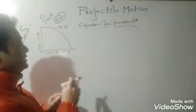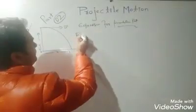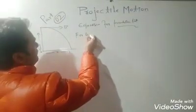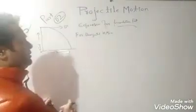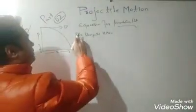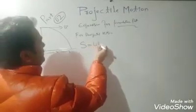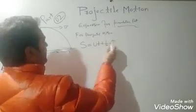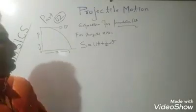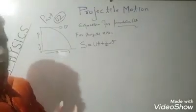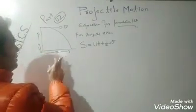Parabolic path کیسے بنتا ہے — پہلے horizontal motion کی بات کرتے ہیں۔ For horizontal motion ہمارے پاس established distance formula ہے: s = ut + ½at². جب horizontal distance cover کرنی ہو تو s کی جگہ x لیں۔ u وہی initial velocity ہے۔ اور یہاں a = 0 ہوتا ہے۔